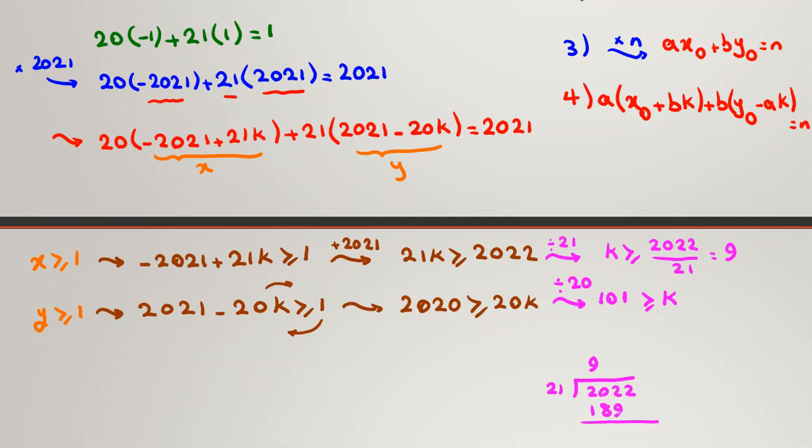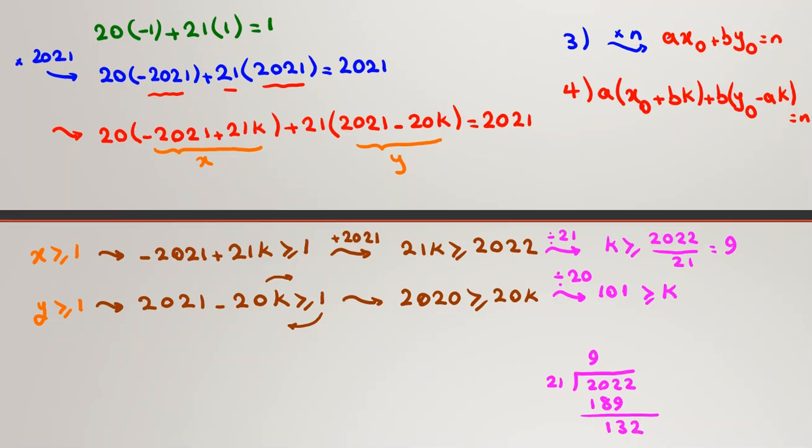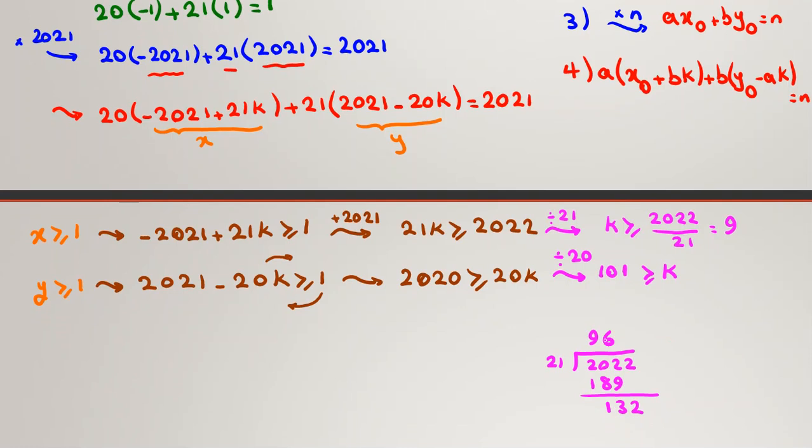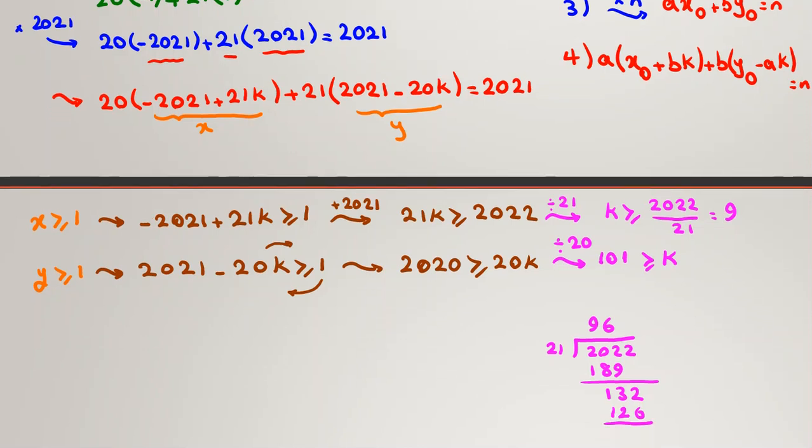This, 12 minus 9, is 3, 9 minus 8, is 1, 132. And if we place 6 here, it will be 6, 6 times 2, 12, and 6 is the remainder. So, we conclude that it will be 96 point something.